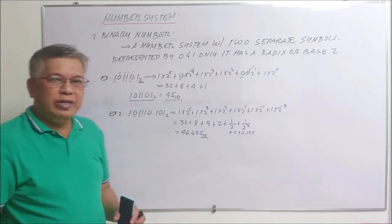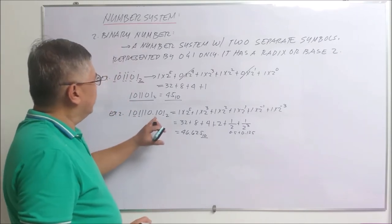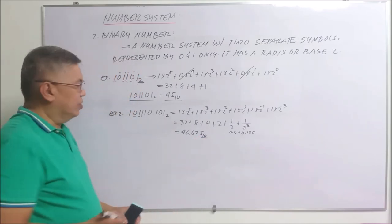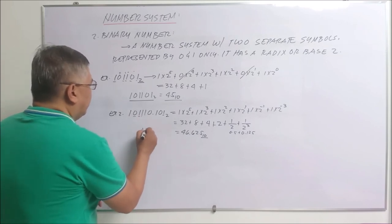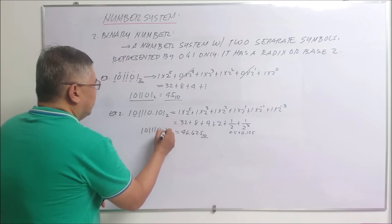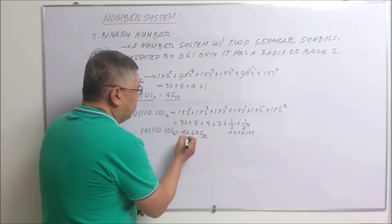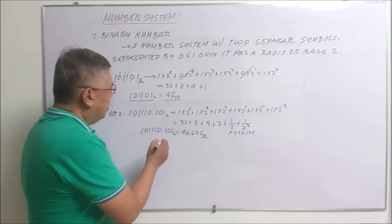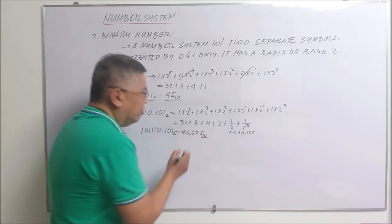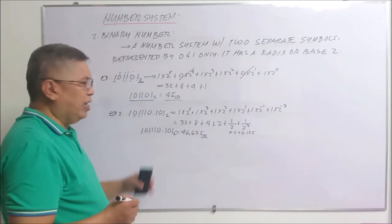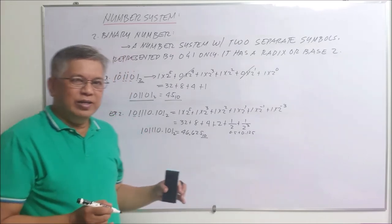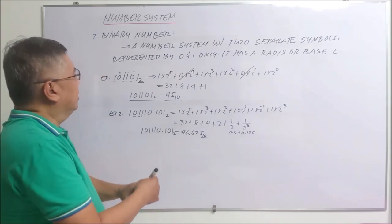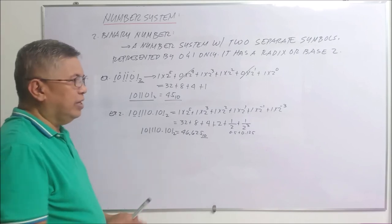It's now in base ten. So 101110.101 base two is equivalent to 46.625 base ten. Take note that the point in the binary number is called the binary point and the point in the decimal number is called the decimal point. This is likely to come up in quizzes, so take note of that particular discussion on binary and decimal points.